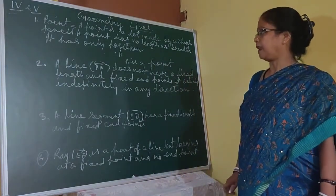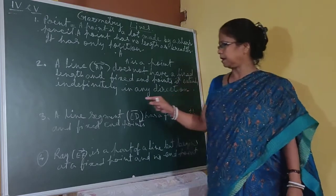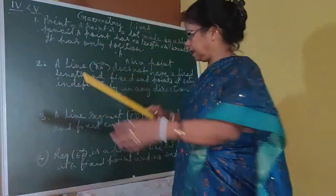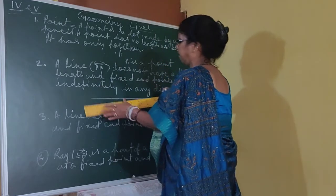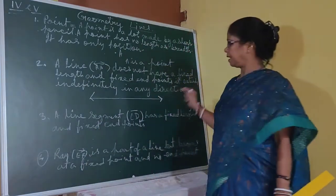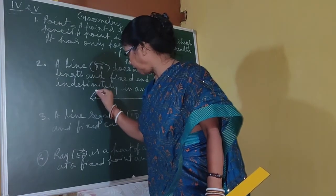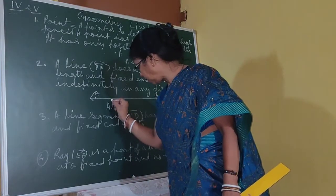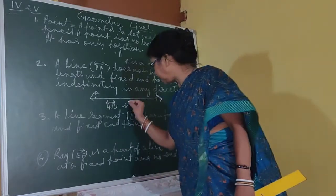Then, what is a line? A line does not have a fixed length and fixed end points — it extends indefinitely in any direction. A line is a straight line with no fixed length; it can extend both sides, left and right. So you have to give arrows on both sides. If the name is A and B, it is denoted as AB with a straight line and arrows on both sides.